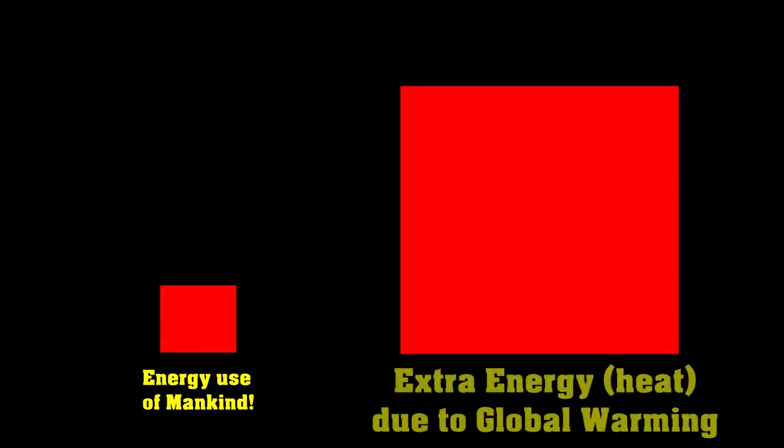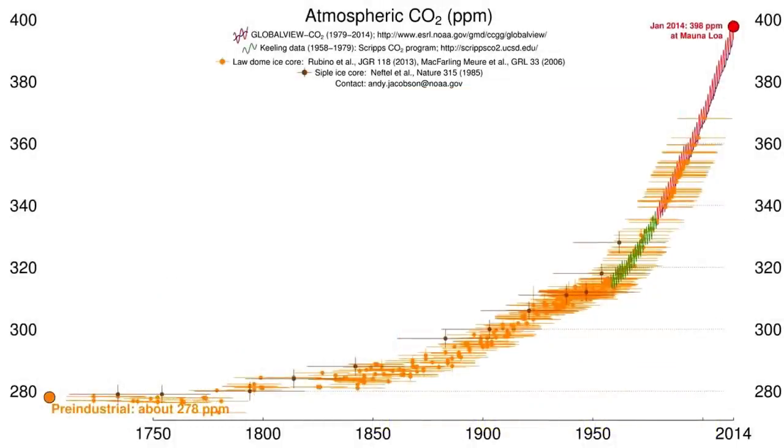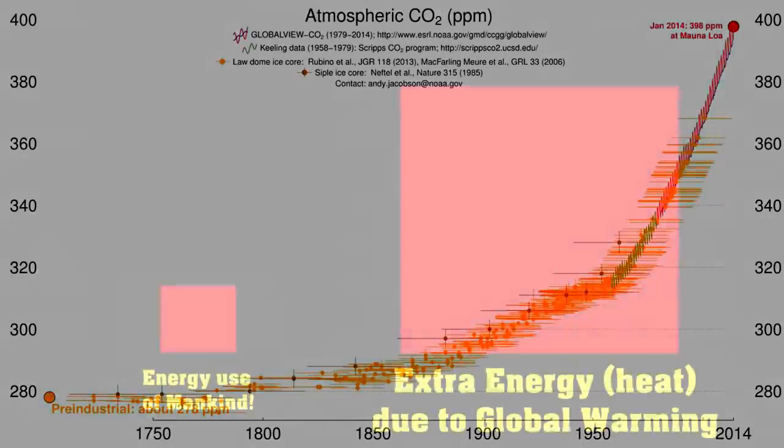And the answer is, global warming heats up the planet about 10 times as much as all of the energy production of mankind. That is, all of the energy of mankind actually eventually ends up as heat in the atmosphere. But the extra energy harvested from those legacy waste products in the atmosphere heated up 10 times more.